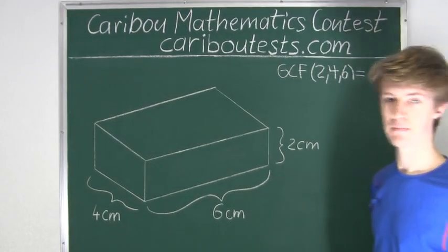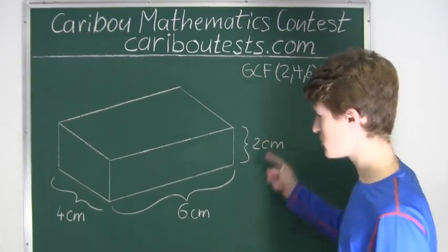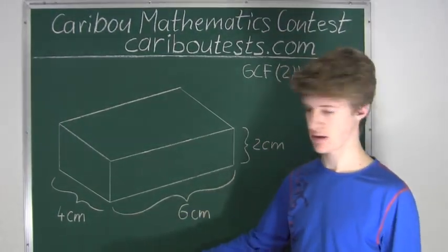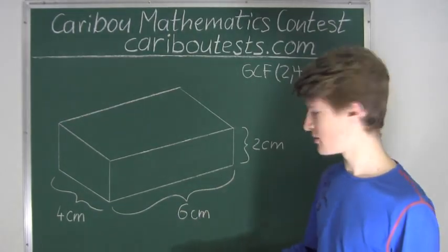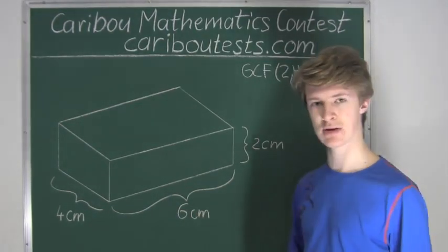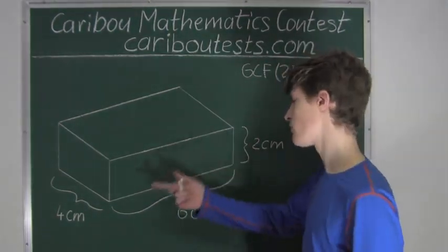The greatest common factor between 2 and 4 is obviously 2, and 2 is also a factor of 6. Therefore, 2 must be the greatest common factor of 2, 4, and 6.